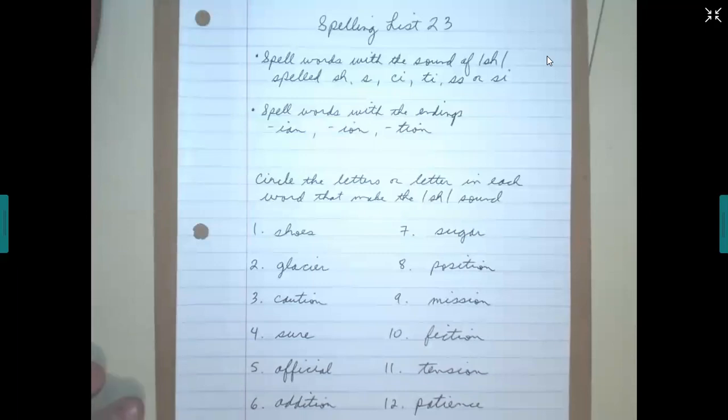Today we are working on spelling list 23. We are going to spell words with the sound of sh spelled with S-H, S-C-I, T-I, S-S, or S-I. And also we're going to spell words with the endings I-A-N, I-O-N, or T-I-O-N.